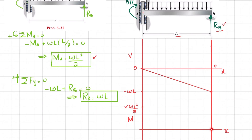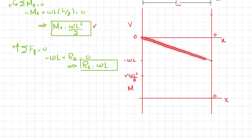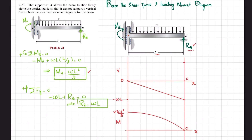At end B the moment equals zero. The shear force was a first-degree straight line with decreasing slope, so the bending moment will be second degree — a parabolic curve. Drawing it accordingly, this is your bending moment diagram for this beam with the given loading.